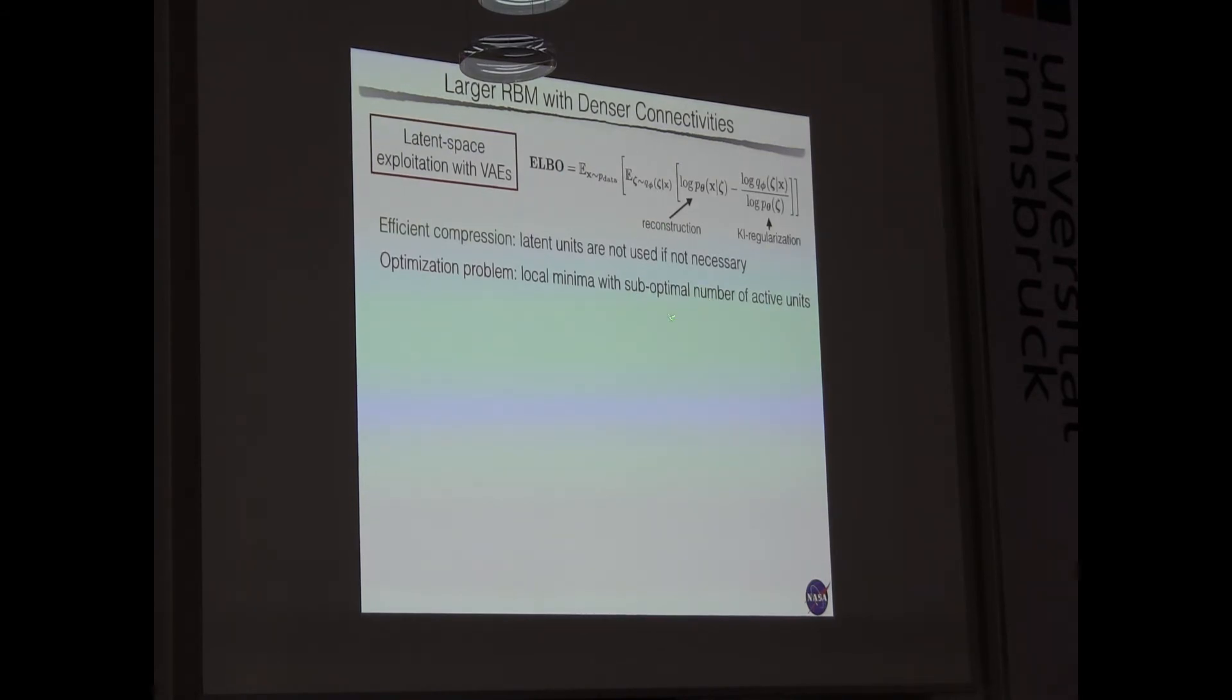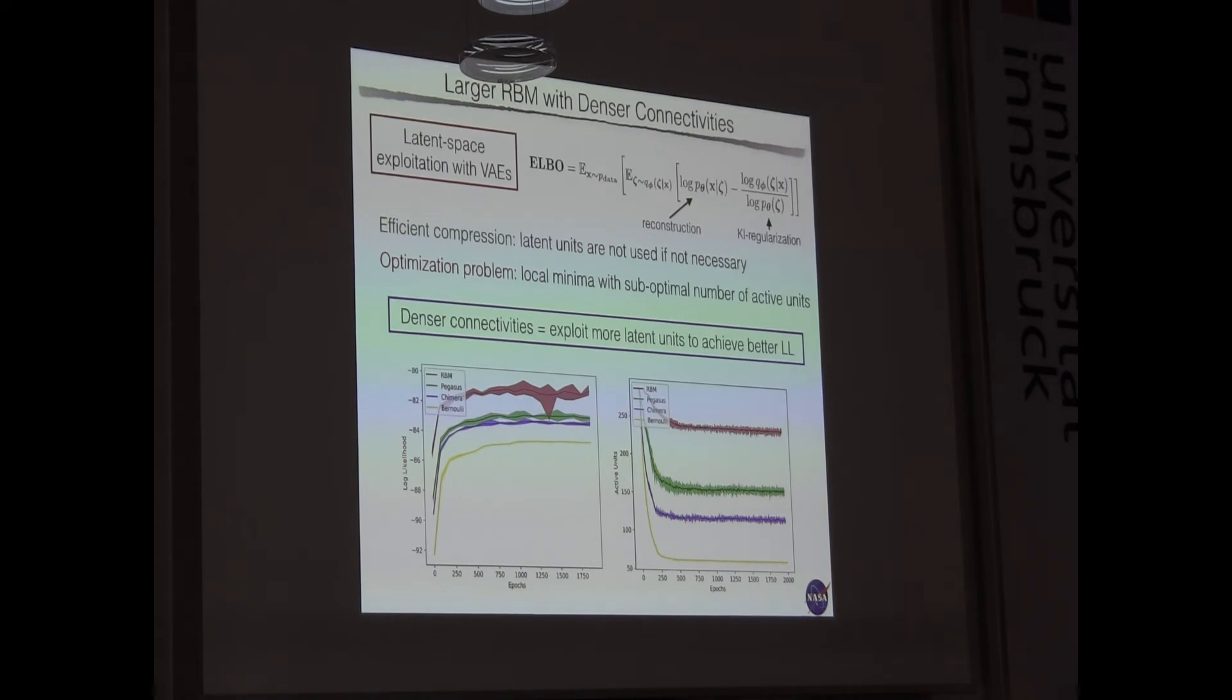And this is another problem I want to briefly mention. In a variational autoencoder, we have two components of the loss function. One is a reconstruction term. And because it tries to reconstruct visible data from latent representation, it helps the model to use more latent units, more information encoded. But then we have a regularization which makes the encoder equal to something that does not depend on the input. X is the input, Z is the latent variable. So this actually tries to shut off latent units. This is good because it may allow for efficient compression, but it turns out it's an optimization problem because during training we can be stuck in local minima with a sub-optimal number of active units.